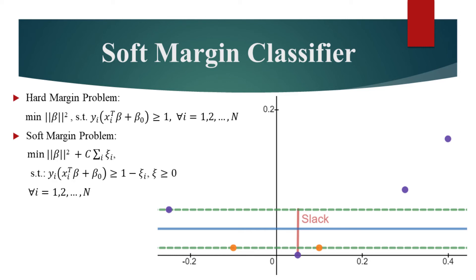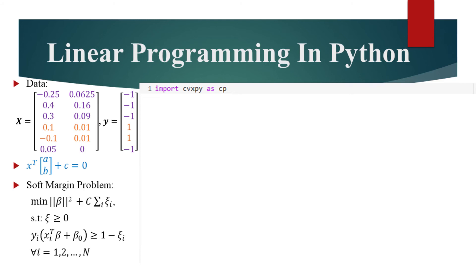And there is another constraint to make sure we don't have negative errors. Now that we've stated the constraint optimization problem for finding the soft margin classifier, let's find it for the data shown on the graph. For optimization,